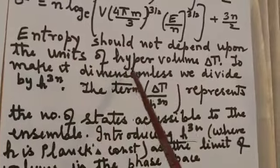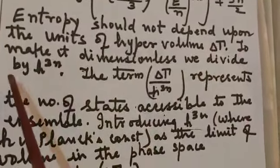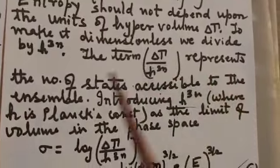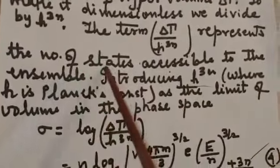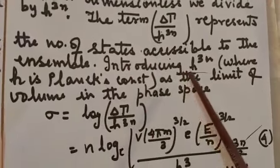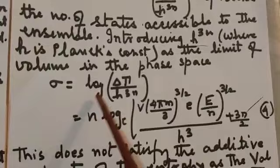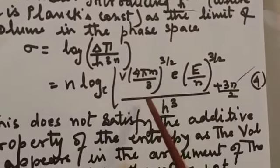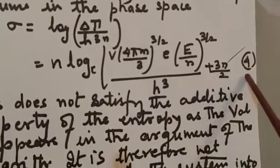This entropy should not depend on the units of the hyper volume. To make it dimensionless, we divide delta tau by h^(3N), where h is Planck's constant. The term delta tau / h^(3N) represents the number of states accessible to the ensemble. Introducing h^(3N) as the unit cell volume in phase space, sigma = log(delta tau / h^(3N)), which simplifies to: sigma = N log[V * (4 pi m / 3)^(3/2) * (E/N)^(3/2) / h^3] + 3N/2. This is equation 4.